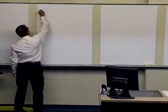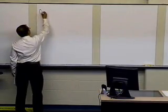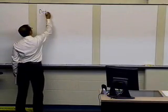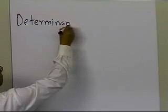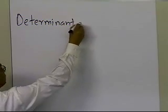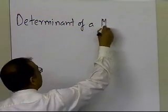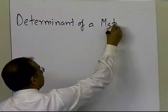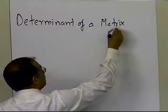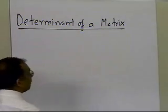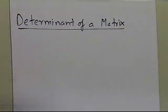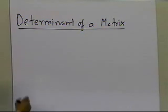In this segment, we're going to talk about how to find the determinant of a matrix. There are several ways to find the determinant of a matrix, but one of the most computationally efficient ways is by using the same steps of forward elimination as in doing Gaussian elimination.